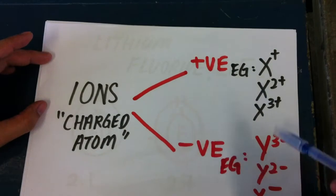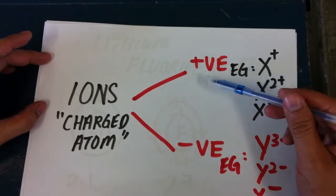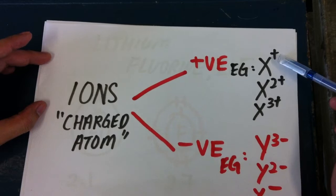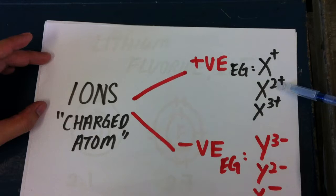When an atom gives away one electron, it will form an ion with X+. If it gives away two electrons it will be 2+. If it gives away three electrons, it's 3+.